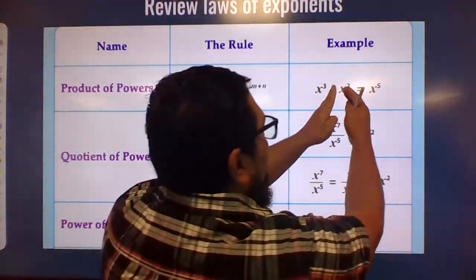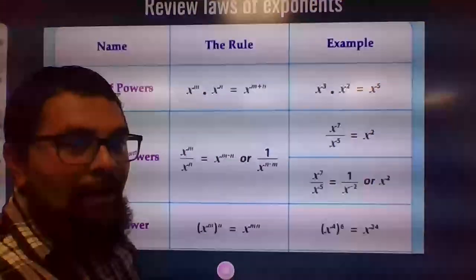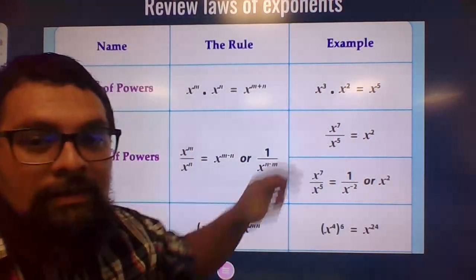Another way we did it was we expanded this and we counted all the X's. But this is the shortcut. This is easier.